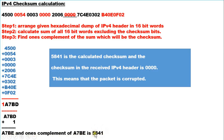So 5841 is the actually calculated checksum, but the checksum received in the IPv4 header is 0000. Since the received checksum 0000 is different from the calculated checksum 5841, this means the packet is corrupted.